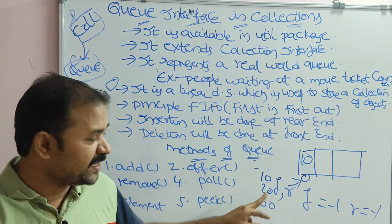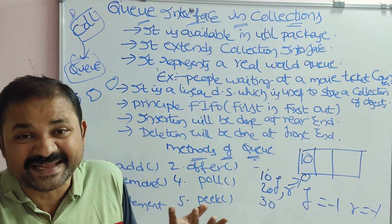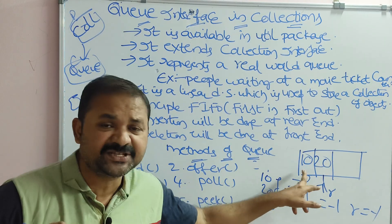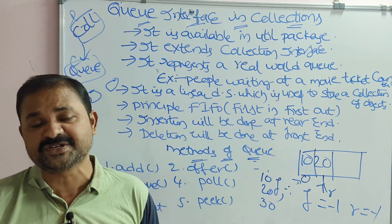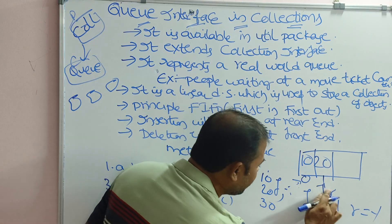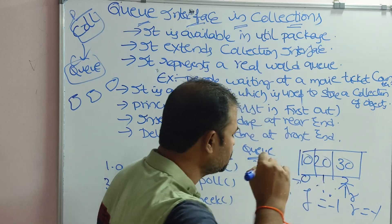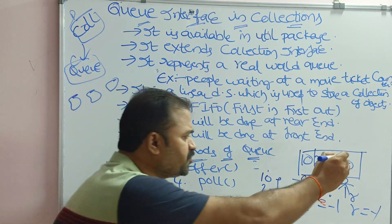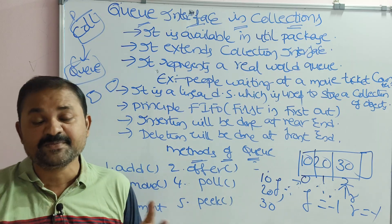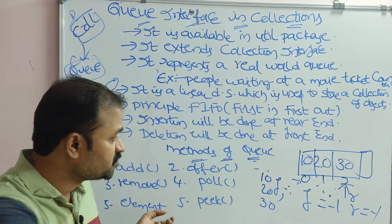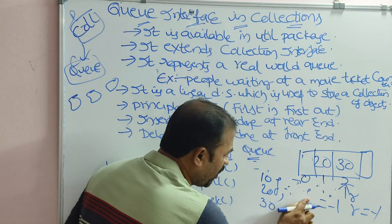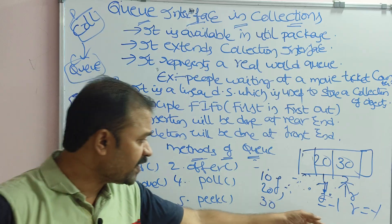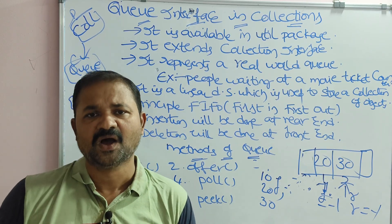We can perform enqueue operations one by one from the rear end. For a removal operation, deletion is done from the front end. The front value is 10, so 10 will be removed. After the removal operation, the front value is incremented. Now front points to 1 and rear points to 2. Likewise we can continue performing such operations.